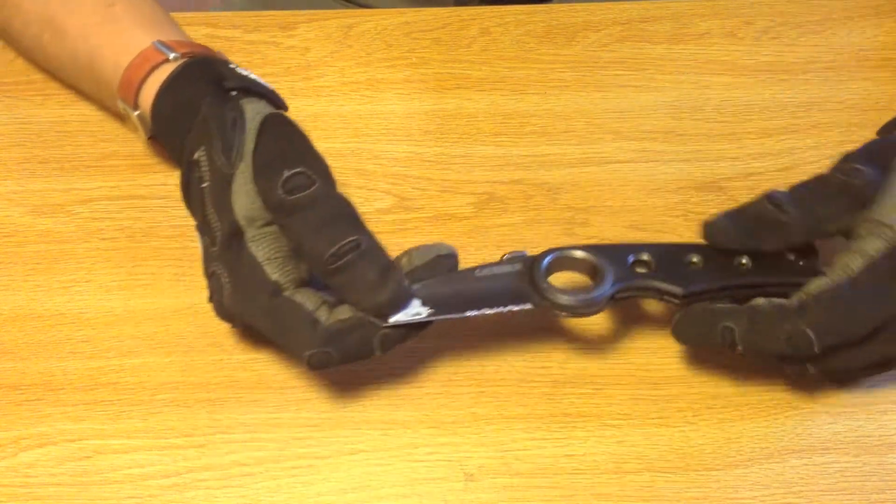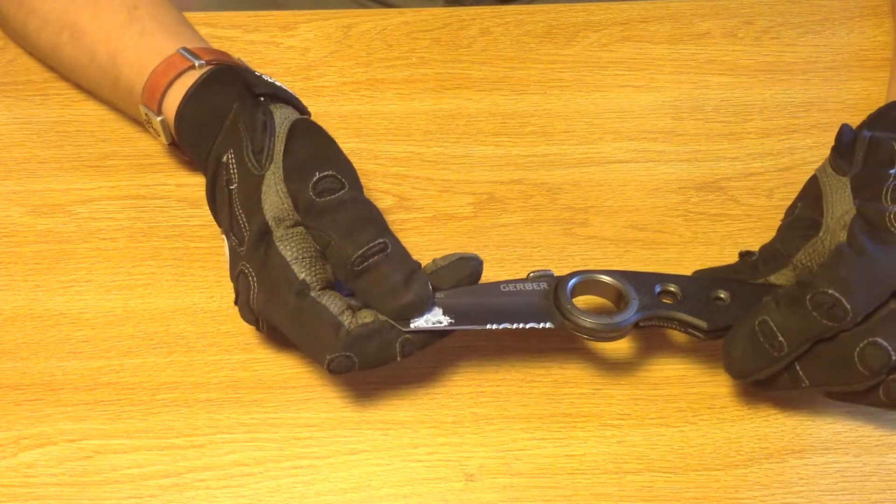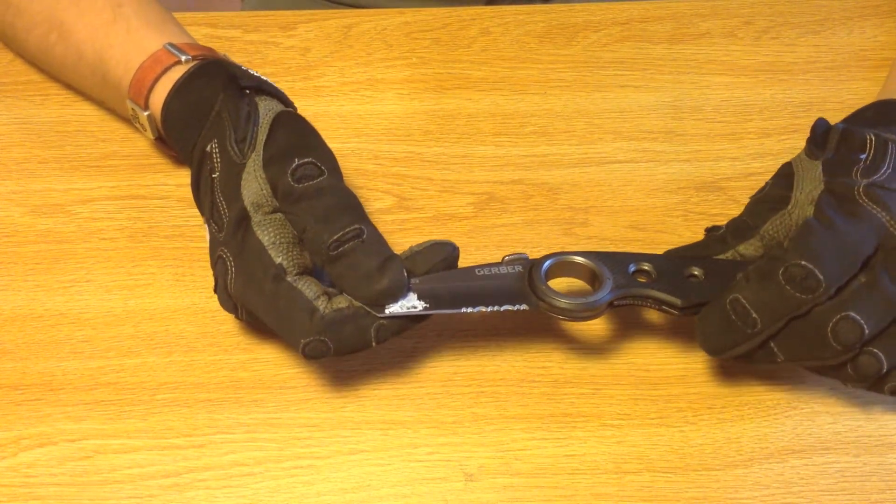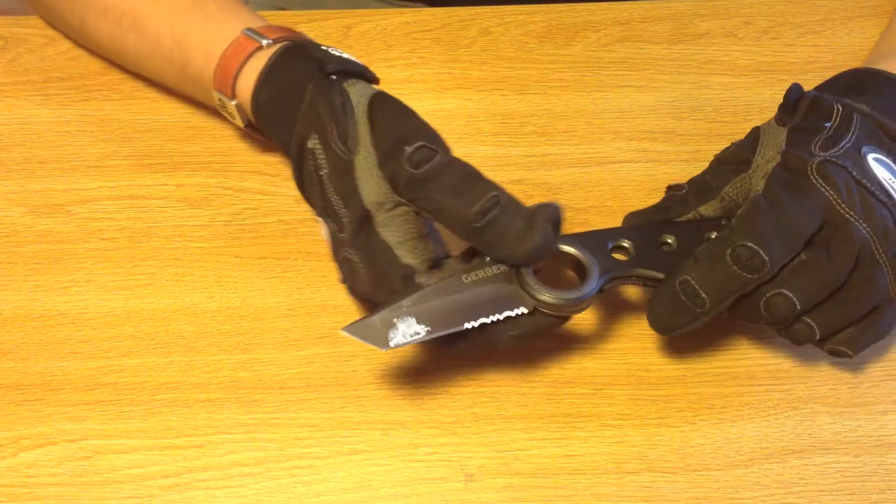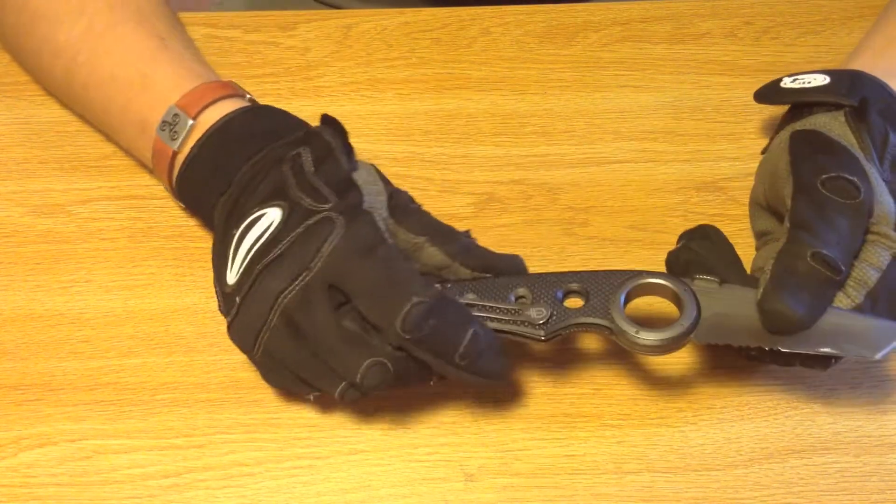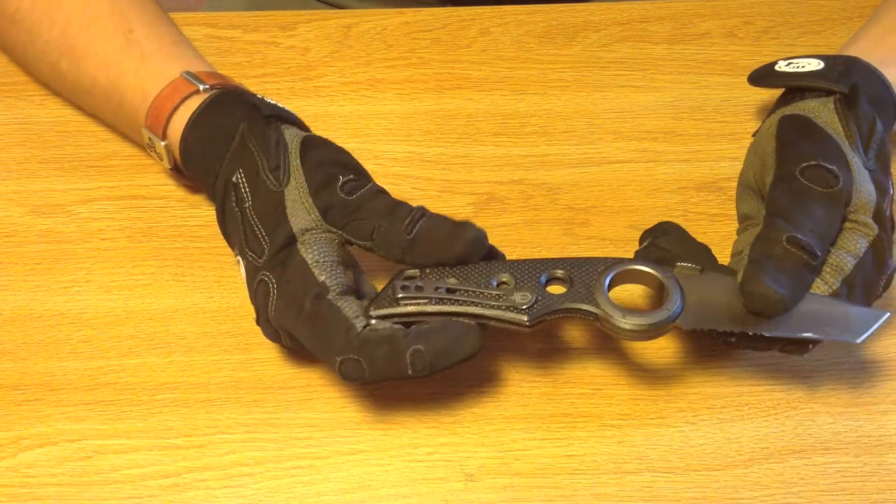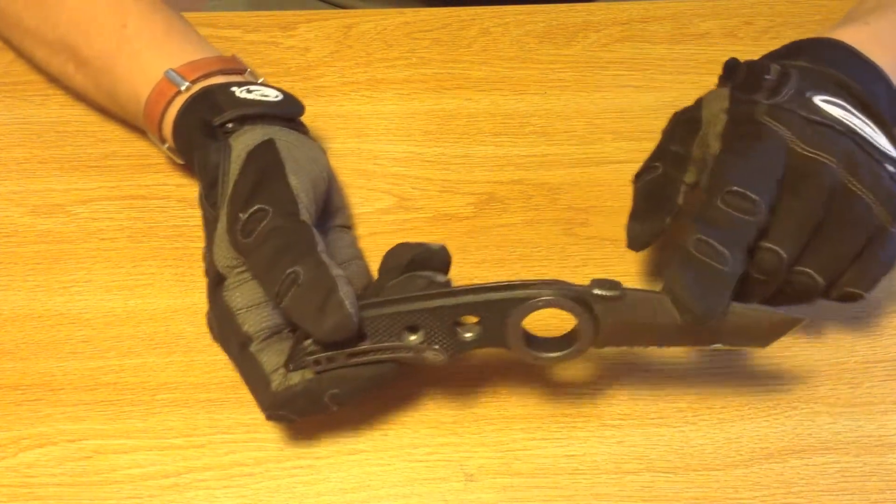The steel type, finally Gerber has revealed the steel type, is 7CR17MO. Which is not a terrible steel. It's not great either. The weight is 4.6 ounces. It has G10 handles, steel liners.